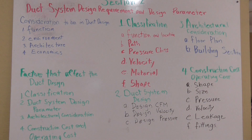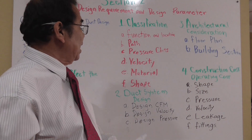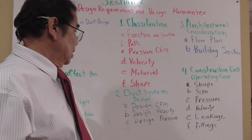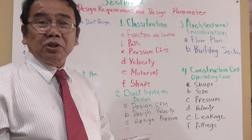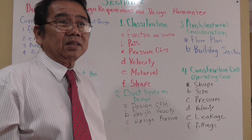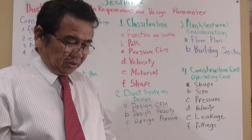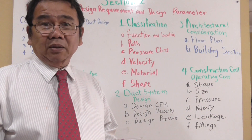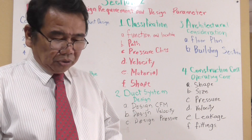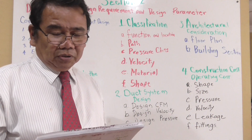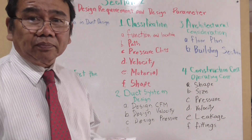On the classification part, we're gonna talk about the function and location, the pressure class, the velocity, the material, and the shape. On the function and location, environmental duct exposure must be considered — where the equipment or duct system is going to be located, inside or outside the building, whether it's negative or positive pressure, fumes and moisture, rust, corrosion, mold, and chemical reaction. The supply duct and exhaust duct are positive type ducts. Return and outdoor ducts are negative pressure ducts.